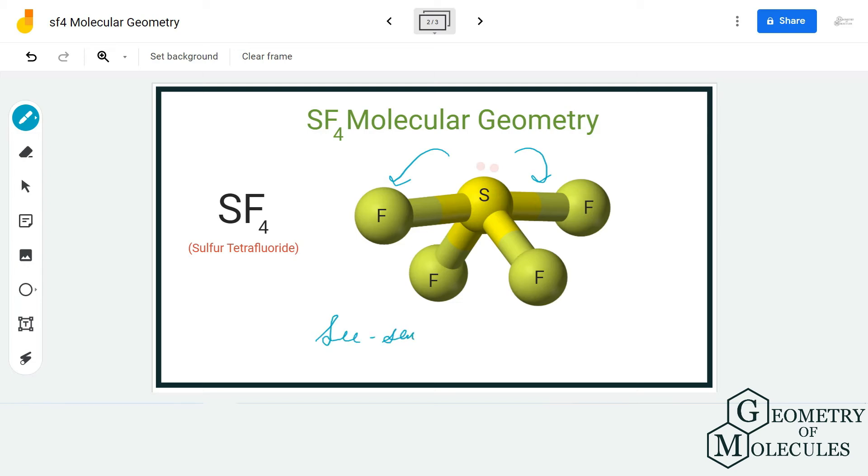You can also confirm it by using the AXE notation method. AXE notation method is the simplest way to determine the molecular geometry of any molecule. Here the AXE notation would be AX₄E₁ because there is one lone pair of electrons on the sulfur atom. If you refer to the table for AXE notation, you'll see that this molecule has a seesaw molecular geometry.